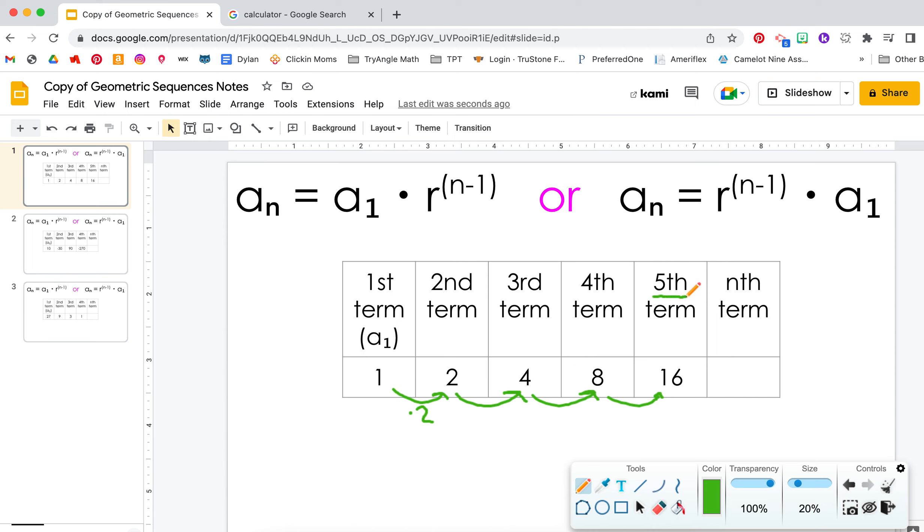Let's just take a peek at this fifth term. For this fifth term, we are multiplying by 2 one, two, three, four times. So technically, the n would be 5 and then minus 1 would be 4. So that is the reason for having that n minus 1.